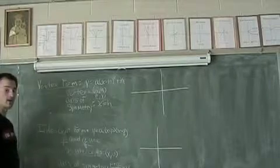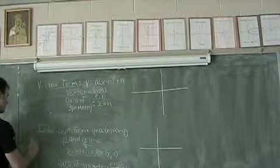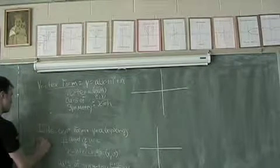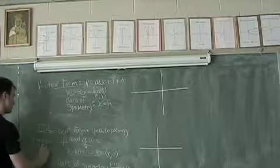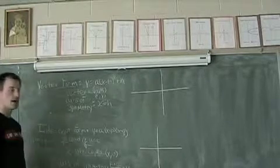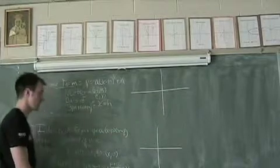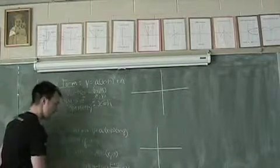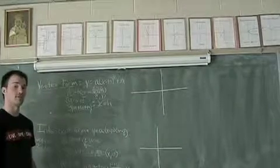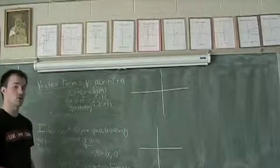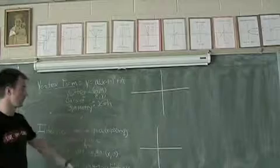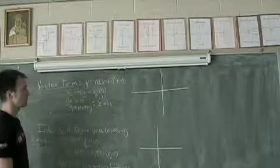Cool thing about intercept form, it gives you three points almost off the bat. It gives you your first X-intercept, your second X-intercept, and you can find that axis of symmetry very quickly. So all you need to find is one more, then you've got your five after using axis of symmetry.